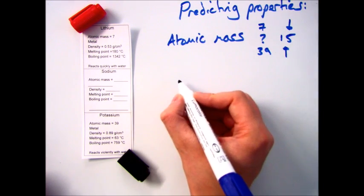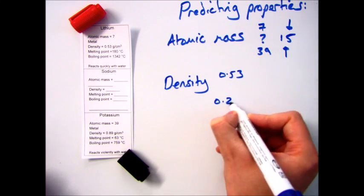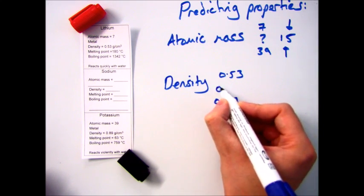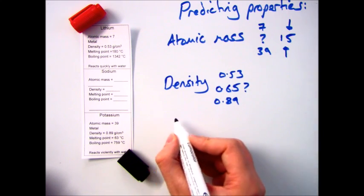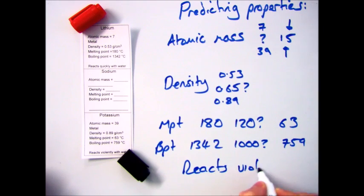He had the same idea for density. For example, lithium is 0.53 grams per centimeter cubed and potassium is 0.89 grams per centimeter cubed, so he'd go in the middle around 0.65. He'd do the same with the melting point, the boiling point, and the way it reacts.